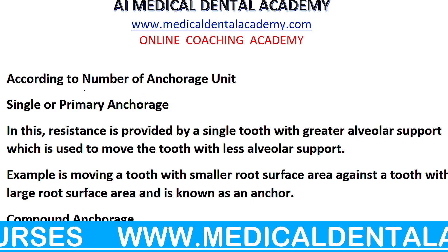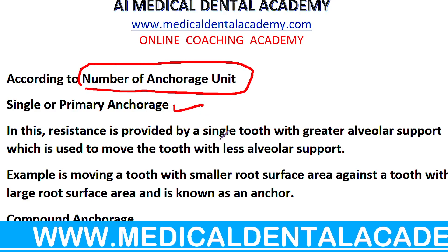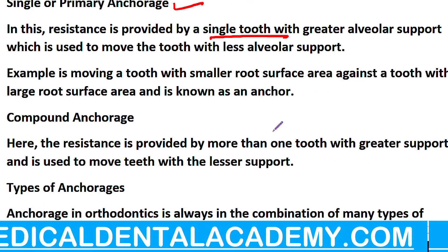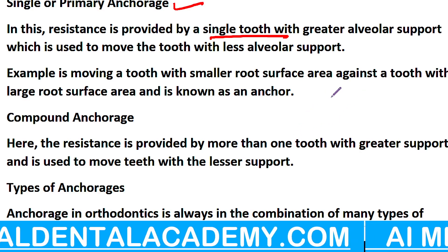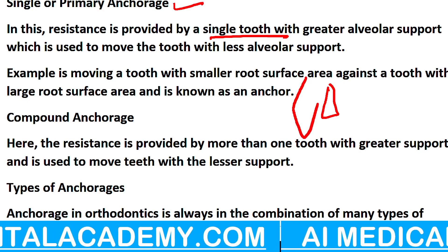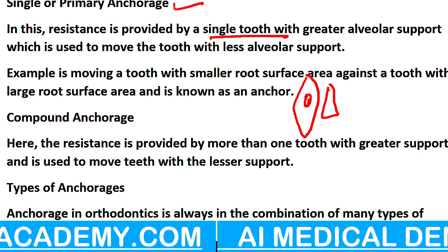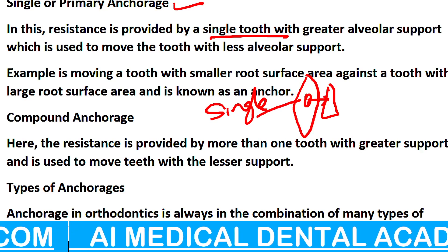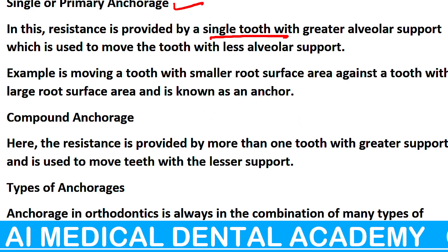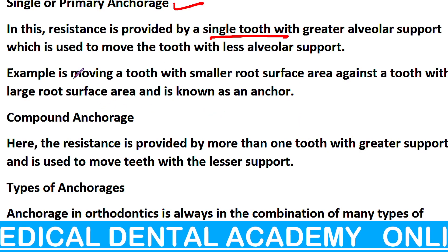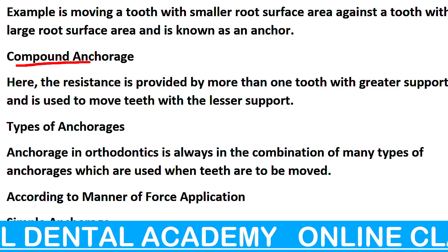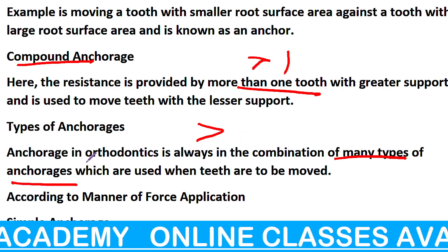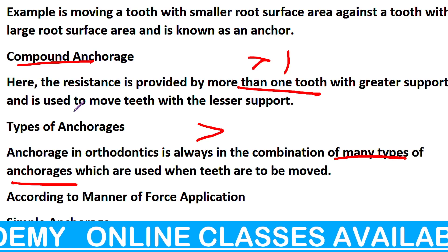Number of anchorage units के हिसाब से: Single — मतलब single tooth involved होगा। Example: अगर lateral incisor move करना है, तो आपने canine का support लिया — canine पर एक चीज़ लगा दी, इसके ऊपर से force दे रहे हो — यह हुआ single anchorage. Canine का cementum area और root surface area थोड़ा ज्यादा है, bone support भी ज्यादा है। फिर आता है Compound — एक से ज्यादा teeth, बहुत सारे दांत होंगे — उसको बोलेंगे Compound — many anchorages।